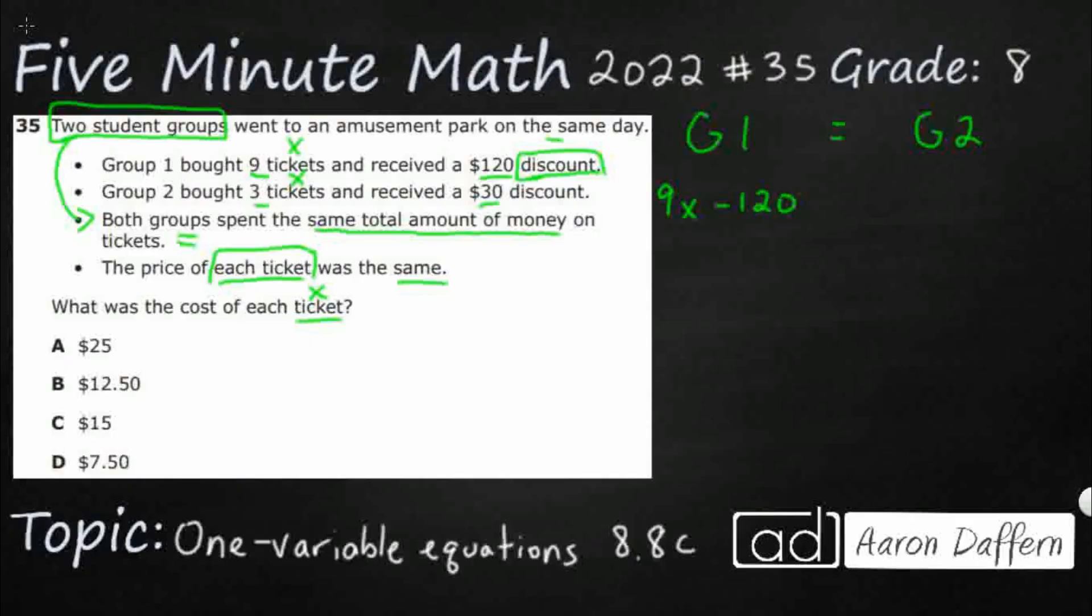If you add 120, it's going to change what you're looking for. So we've got nine tickets and $120 discount. Group two is going to have three tickets because it's 3X. So I'm going to take away 30 as well, since that's also got a discount. So there we go. That's our equation. 9X minus 120 equals 3X minus 30. We have to be able to create that equation from just a standard word problem.